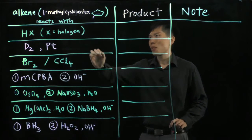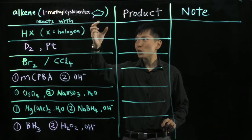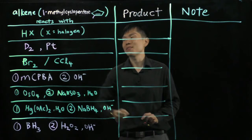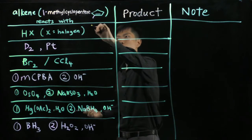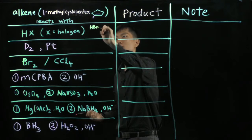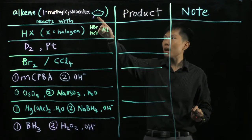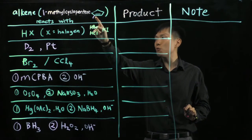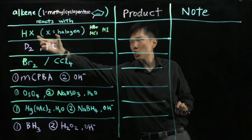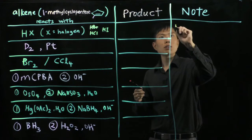So first up, this double bond here undergoes an addition reaction with hydrogen halide. This could be HBr, HCl, or HI. Notice that on this carbon here of the double bond there is a methyl group, and when you add this reagent it follows the Markovnikov rule.